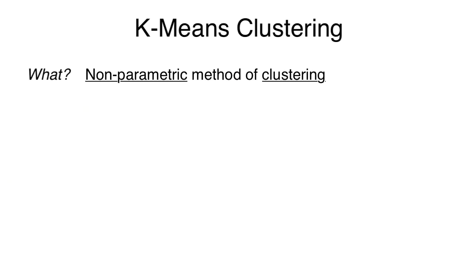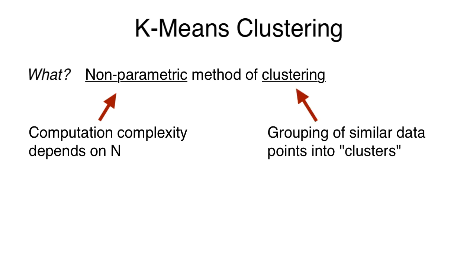k-means is a non-parametric method of clustering. Non-parametric means computation complexity depends on the number of samples. Clustering groups similar data points to form clusters. How many clusters? Well, however many you want. This is defined by setting k in k-means. It's a tunable hyperparameter.